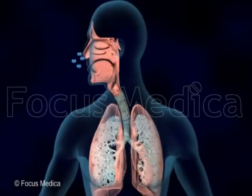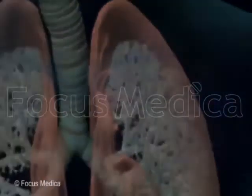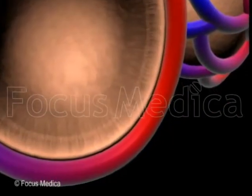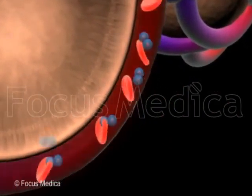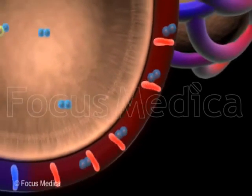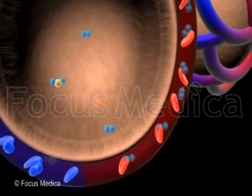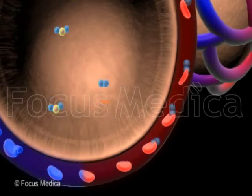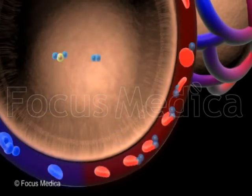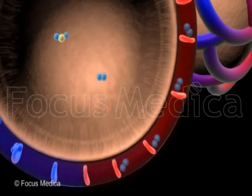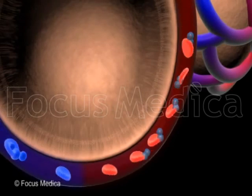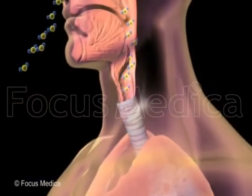Inhaled oxygen enters the air sacs and then passes through the thin walls of alveoli to the red blood cells in the surrounding capillaries. As the red blood cells lose their carbon dioxide and gain oxygen, their color changes from bluish to red. The carbon dioxide transferred from the capillaries to the air sacs is expelled from the lungs.